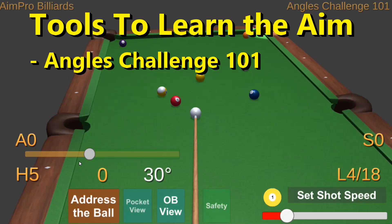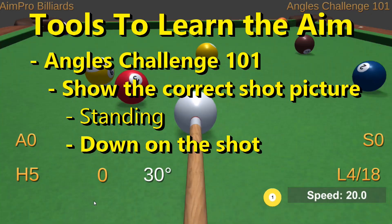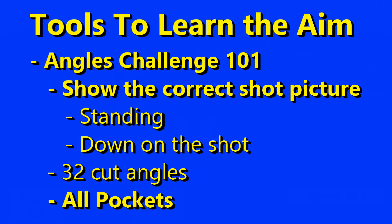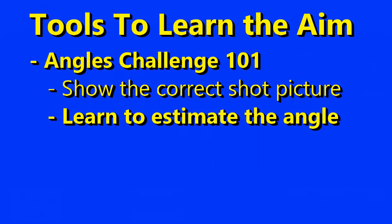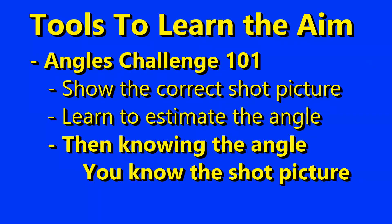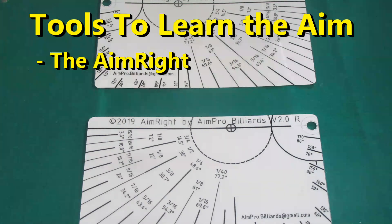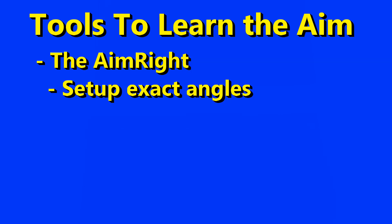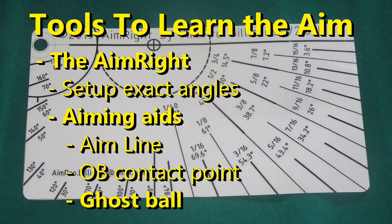And if you don't know the correct aim, I have several tools to help. The Angles Challenge 101 game will show you the correct shot picture, both standing and down on the shot, for up to 32 cut angles into all pockets and including back cuts. And the AimRight training tool allows you to set up these exact known aims on the practice table, along with its multiple aiming aids.